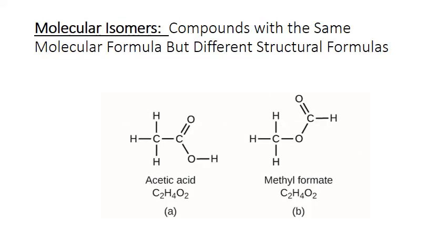Molecular substances can form isomers. These are substances that have the same number and type of atoms, but different arrangements of those atoms in the molecules. Another way of saying this is that they have the same molecular formula but different structural formulas.